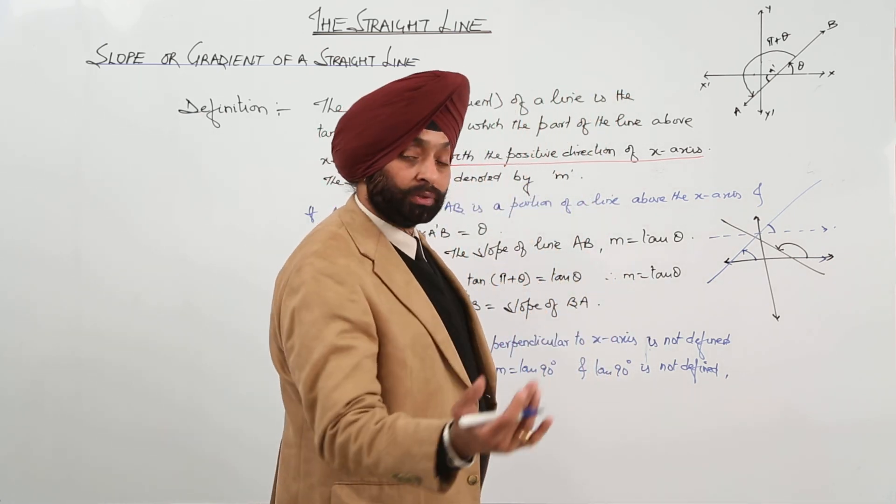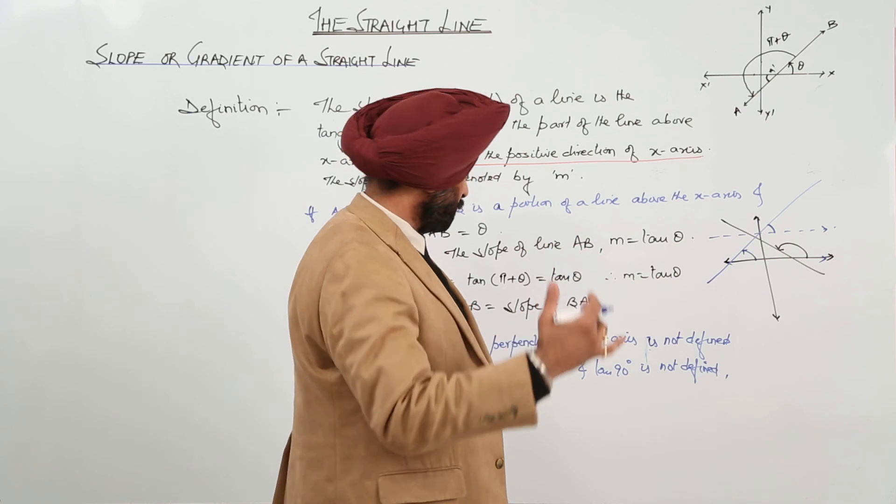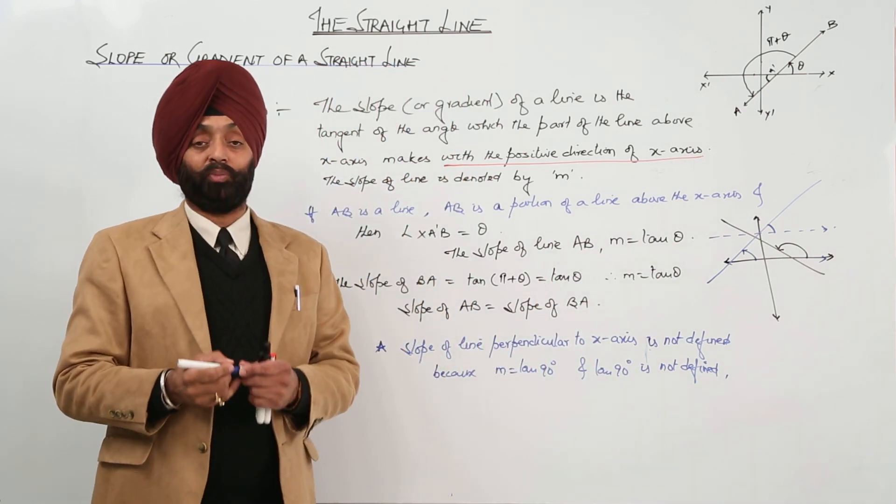Is it clear? So, slope will always be from the positive side. Is it clear? So, this was all about the slope of a line.